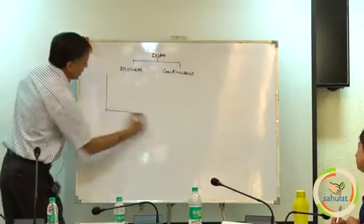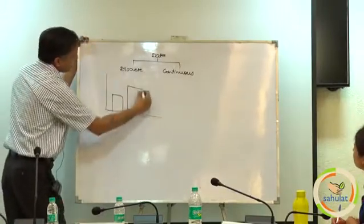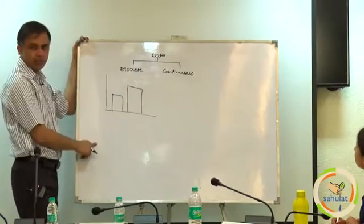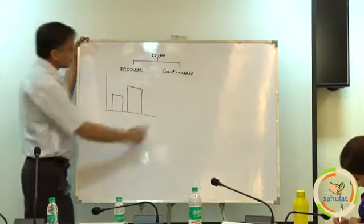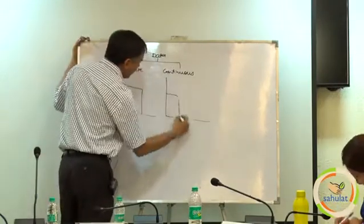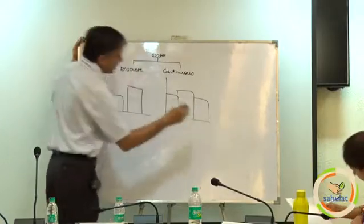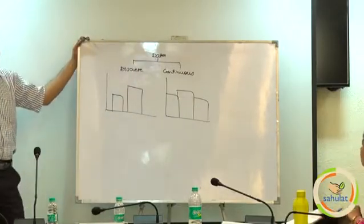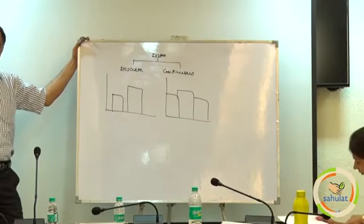And when we go for the graphical representation, the graphical representation for the discrete is this and it is called as bar charts. For continuous data we make things like this. It is called as Histograms. Have you heard of such terms? Yes sir.